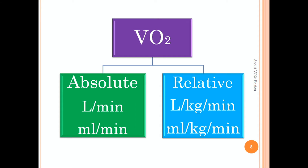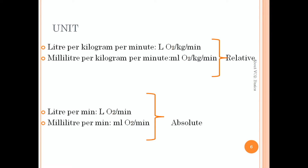VO2 can be expressed as an absolute value and a relative value. The difference between absolute and relative is in their units. The unit of relative VO2 is liter of oxygen per kg per minute, and it can also be expressed as milliliter of O2 per kg per minute. The unit of absolute VO2 is liter O2 per minute or ml O2 per minute.